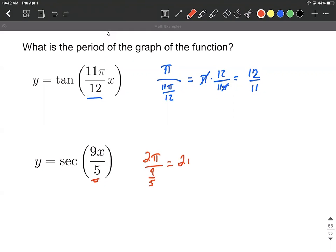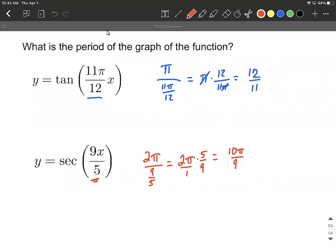This is equivalent to saying 2π multiplied by the reciprocal 5 over 9, which does a little bit of reducing down as we think about multiplying numerators and get 10π, and multiplying denominators and getting 9.